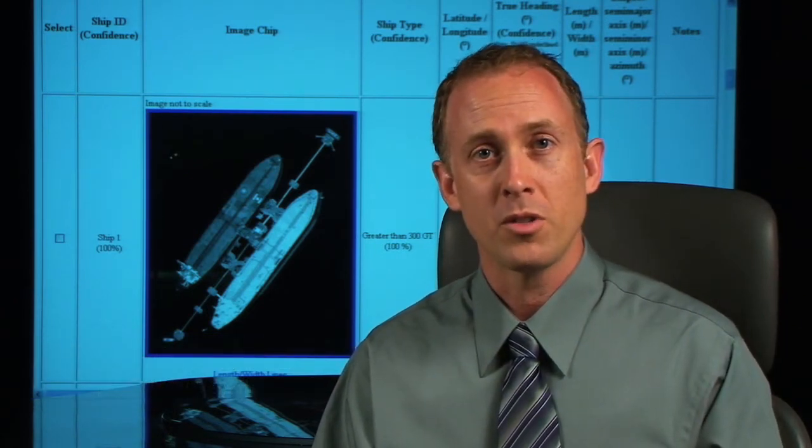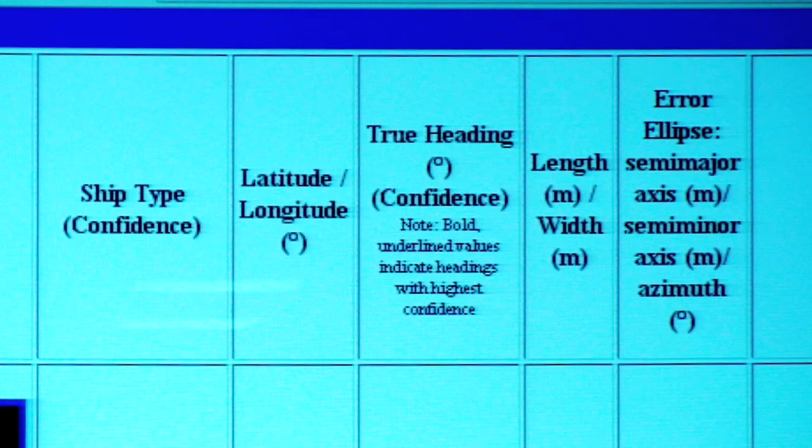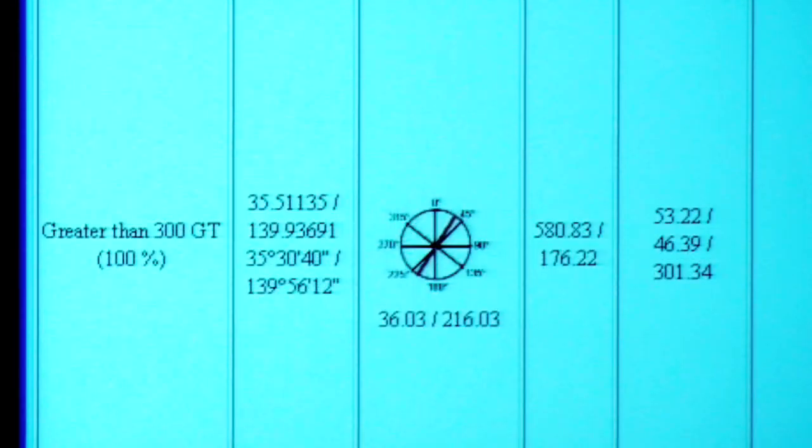After processing is complete, the results of all the algorithms are output into formats that are easily interpreted by the end user. The first output is an HTML tip sheet, which includes the probable ship type with a confidence rating, length and width, latitude and longitude, and heading for each detected ship.